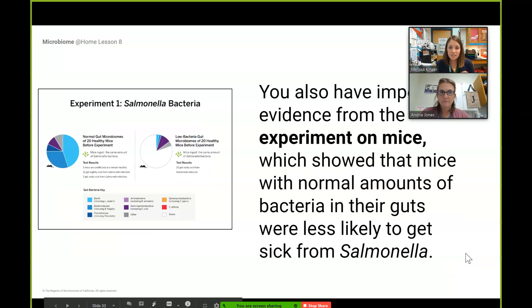Our next piece of evidence comes from the experiment with the mice. We know that mice and humans have very similar gut microbiomes, so that's why we like to use them in science research. We have this experiment with 20 healthy mice and 20 unhealthy mice, and they were both exposed to the same amount of salmonella bacteria and we saw the differences in what happened as a result of that exposure.